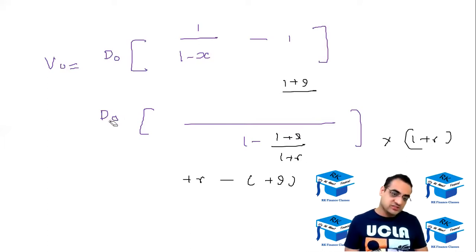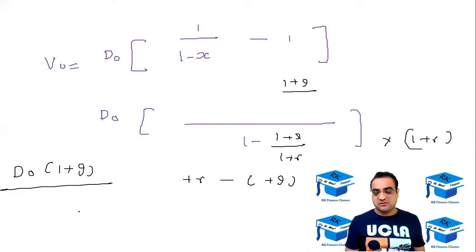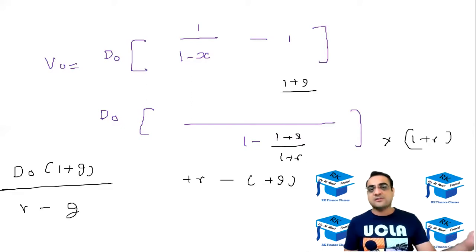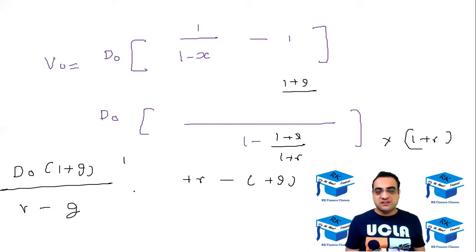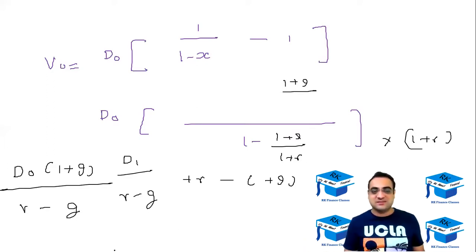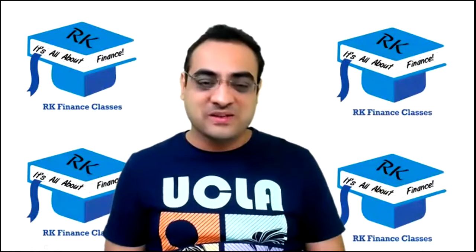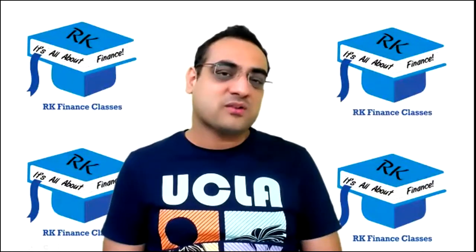So in the numerator we have D0 into one plus g, and in the denominator we have r minus g. And D0 into one plus g is simply D1. So that's how we get the formula d1 upon r minus g. I thought I was going to screw up in between but finally we got it! I'm going to quickly explain it one more time because I was getting confused, so I'll explain it once more.